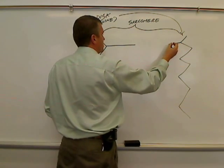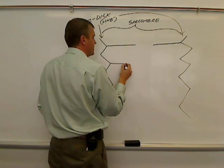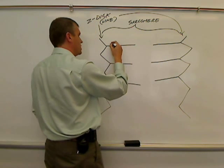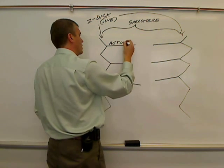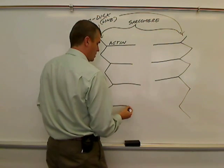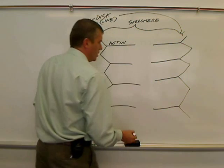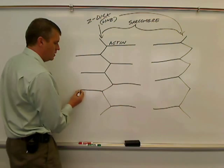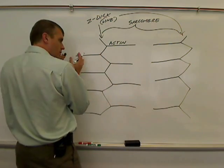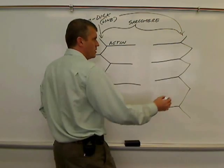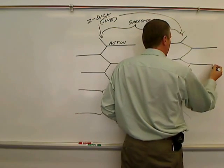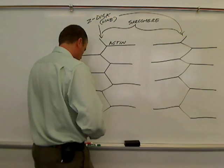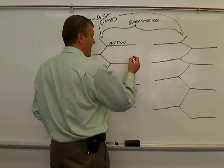In each sarcomere, there are two different major proteins involved. First, I'm going to draw the thin filaments, which are made up of a protein called actin. And I'll continue the actin on the other side of the Z-line. Sarcomeres don't live alone — they have a sarcomere on either side going all the way down the entire muscle fiber. So those are the thin filaments, the actin filaments.